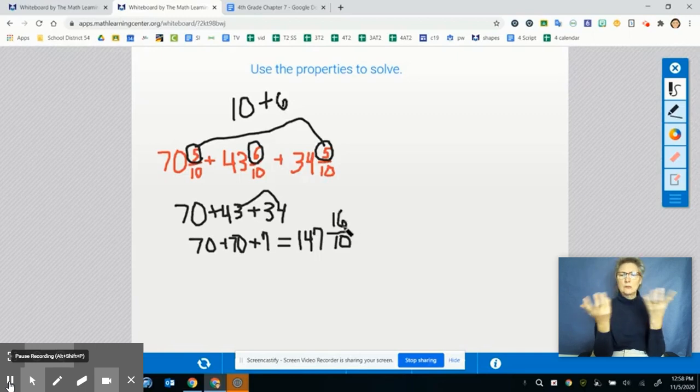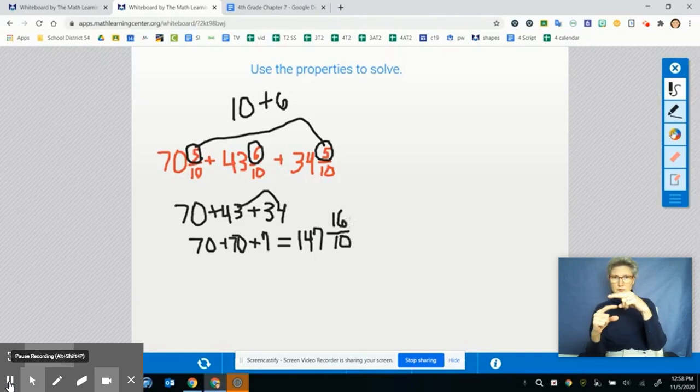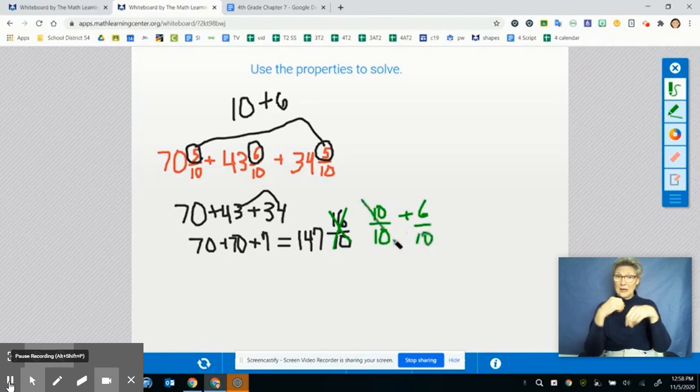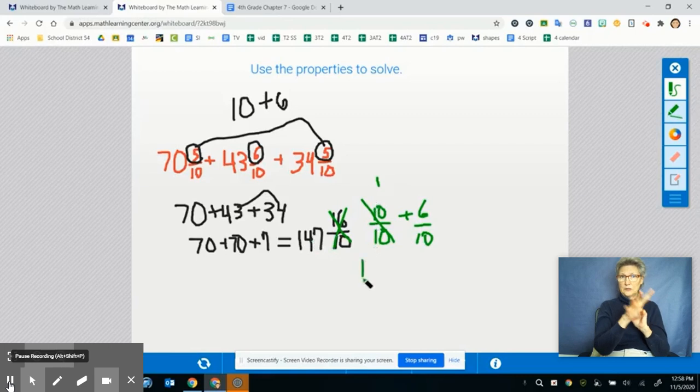Now just like in the last problem, 16 over 10 is bigger than 1. So let's take the 16 over 10 and let's rewrite that as 10 over 10 and that's equal to 1 and then I have 6 over 10 left over. So now if I take this 10 over 10 and I rewrite that as 1, I have 147 plus 1 is 148 and I have 6 tenths left over.